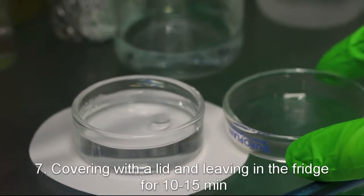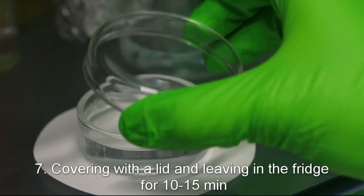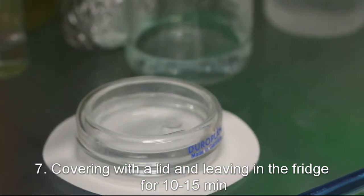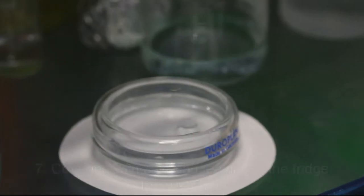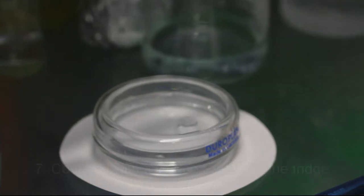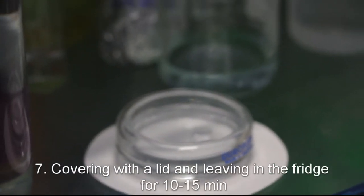After the ammonium persulfate solution is substituted with pure water, we cover it with a lid again and leave in the fridge for another 10-15 minutes. It's very important to leave it in cold again, because the cyclohexane might have partially melted during the water substitution and having the fridge open during that. 10 minutes in cold will allow it to freeze again.